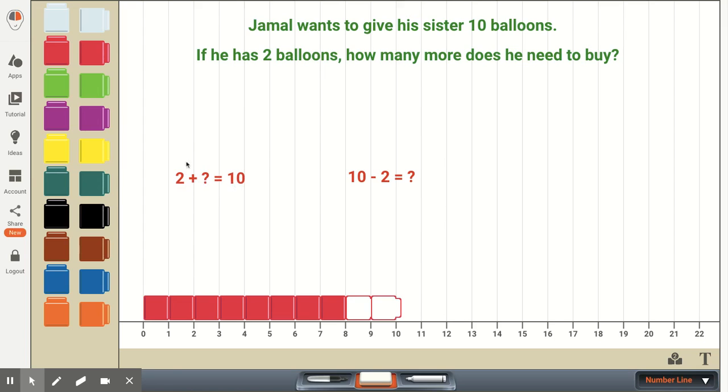But instead of trying to solve the problem this way, we may want to look at it as, well, we know that we want to give the sister 10 balloons. We have 2 already. That's one of the parts. What's the other part? How many do we need to buy?